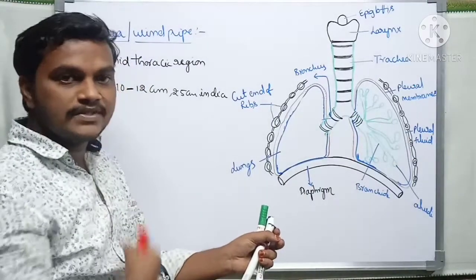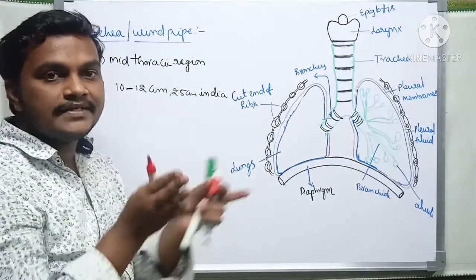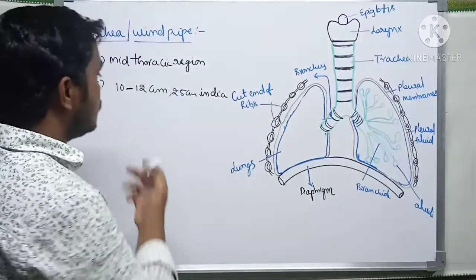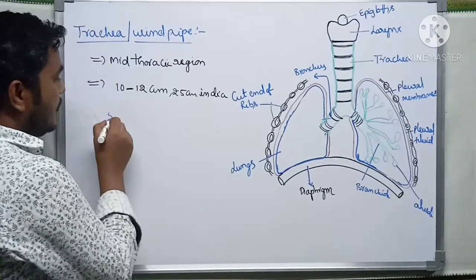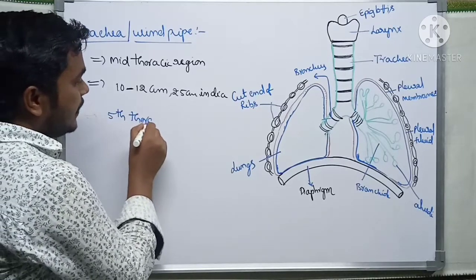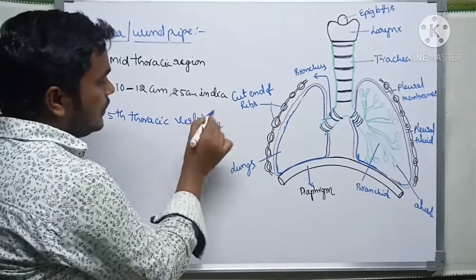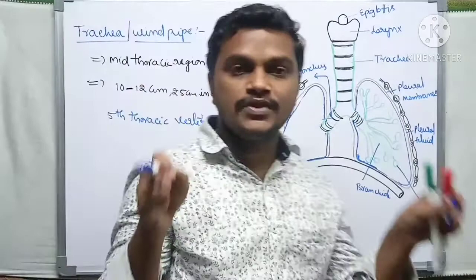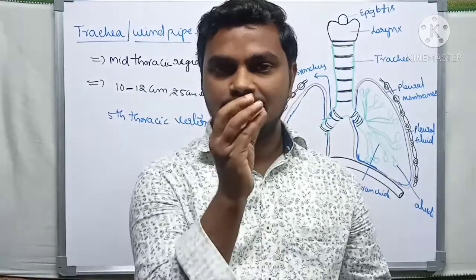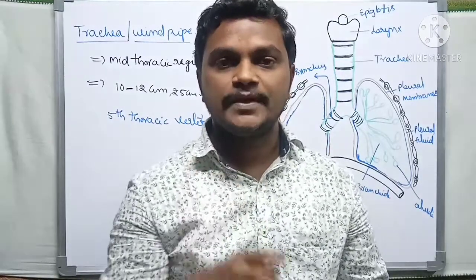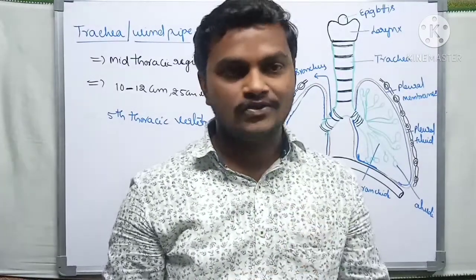The length of the trachea is 10 to 12 centimeters, and the diameter of the trachea is 2.5 centimeters. The trachea bifurcates at the fifth thoracic vertebrae and enters into the next region, which is the lungs. The trachea (windpipe) is supported by C-shaped cartilaginous rings made up of hyaline cartilage.